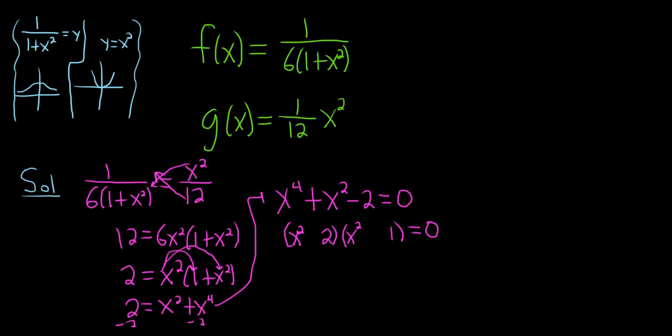So we need two numbers that multiply to negative 2. So 2 and 1. One of them has to be negative and one of them has to be positive because the result is negative. But they have to add up to a positive 1. So that means that the 2 should be positive and the 1 should be negative.